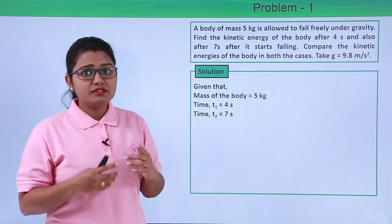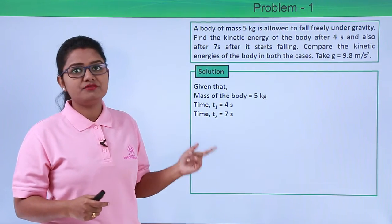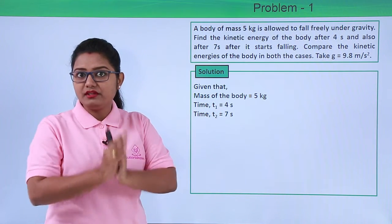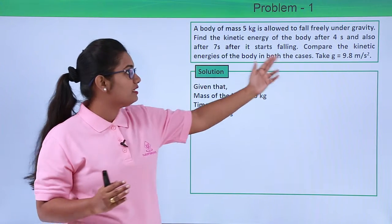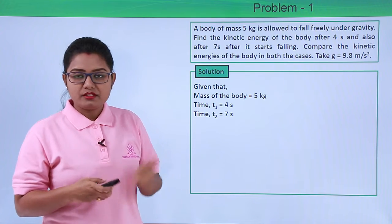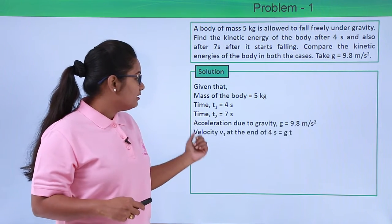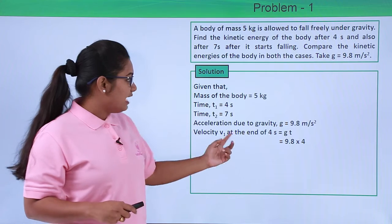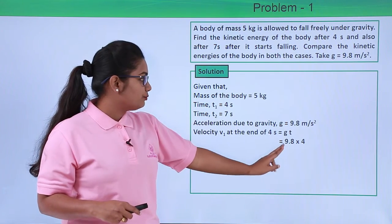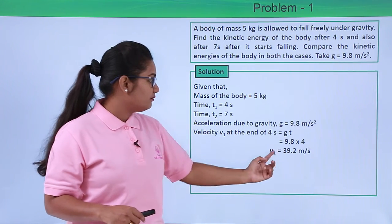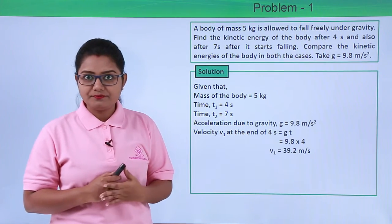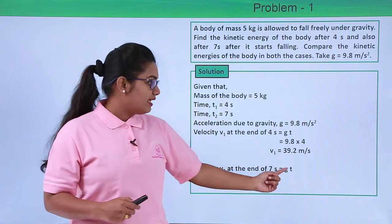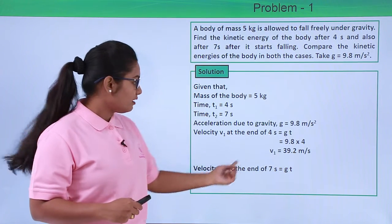For velocity, we will use the first equation of motion for freely falling bodies. Since the body is freely falling with initial velocity 0 and acceleration due to gravity 9.8 meters per second squared, the velocity V1 at the end of 4 seconds equals g×T1. So V1 equals 9.8 multiplied by 4, which gives V1 equals 39.2 meters per second. Similarly, we can find V2 using the same formula g×T2.